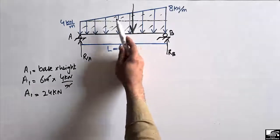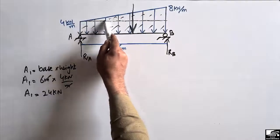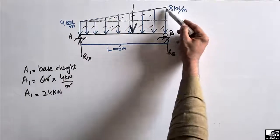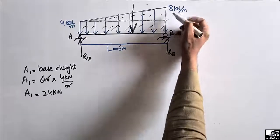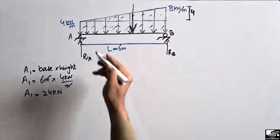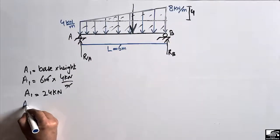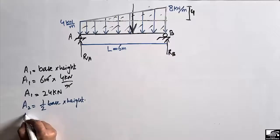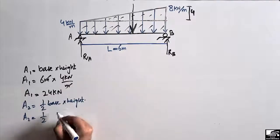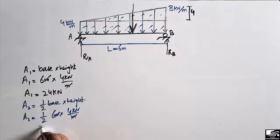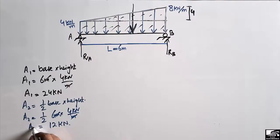Now we find the area of the triangle. The base is 6 m. The height is 8 minus 4 = 4 kN/m. The area of the triangle A2 = ½ × base × height = ½ × 6 × 4, giving us A2 = 12 kN.